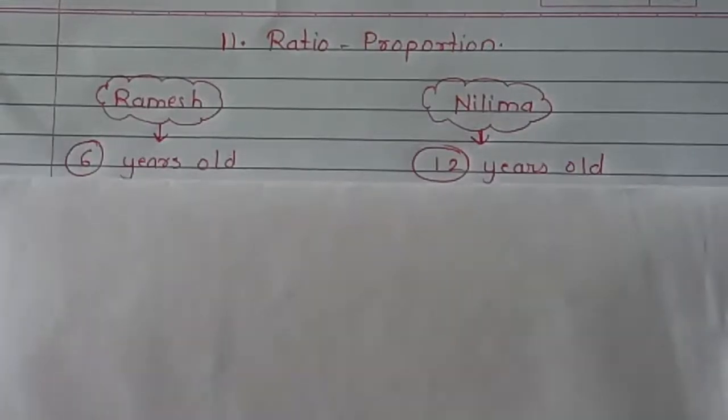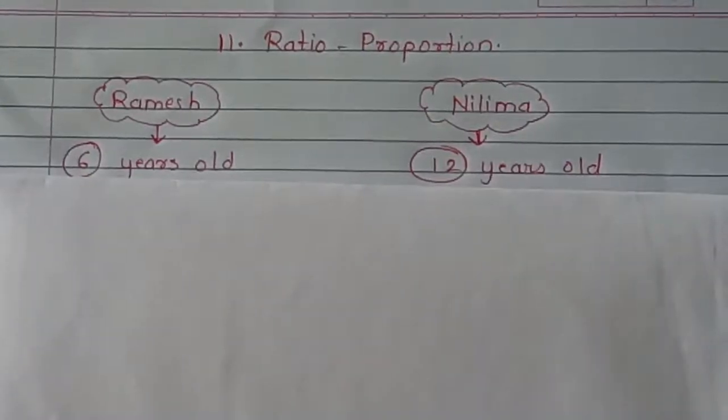Let's learn how to compare two numbers. Last year we studied one way and this year we are going to study another way. I have taken an example with two students whose names are Ramesh and Nilima. Both of their ages are given: Ramesh is 6 years old and Nilima is 12 years old.